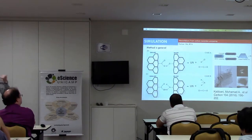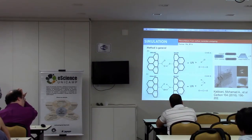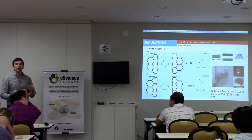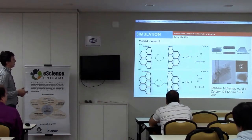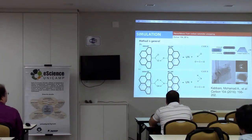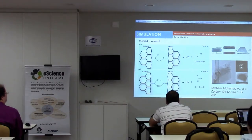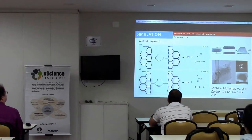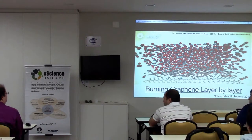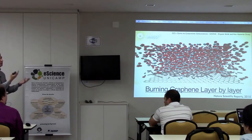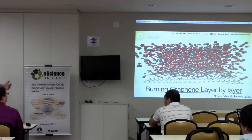We could simulate the method and compare it with experimental results. This first paper was published last year, and it is a very general method. We have improved it a lot — though it initially gives 5–10% yield, you can improve the scalability using many other functionalized carbon nanotubes. A more recent paper, published about three weeks ago in Carbon, shows many other ways to open carbon nanotubes using just basic chemistry.